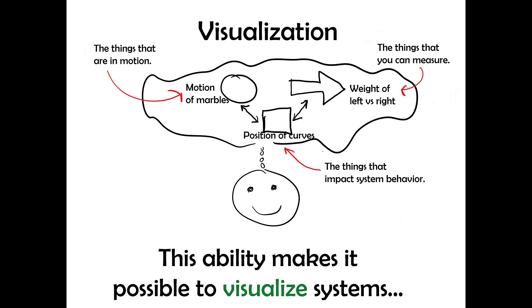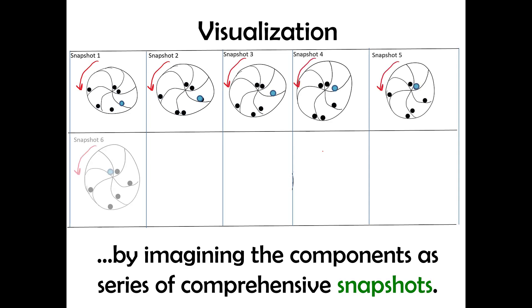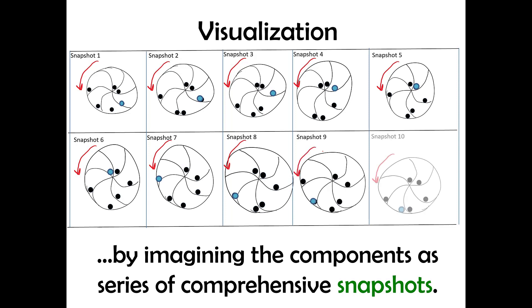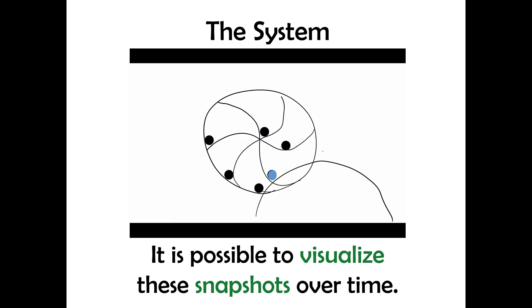This makes it possible to visualize systems by imagining the components as a series of comprehensive snapshots in time. If you can do that, it's possible to visualize these snapshots over time and create animated models of systems that are accurate.